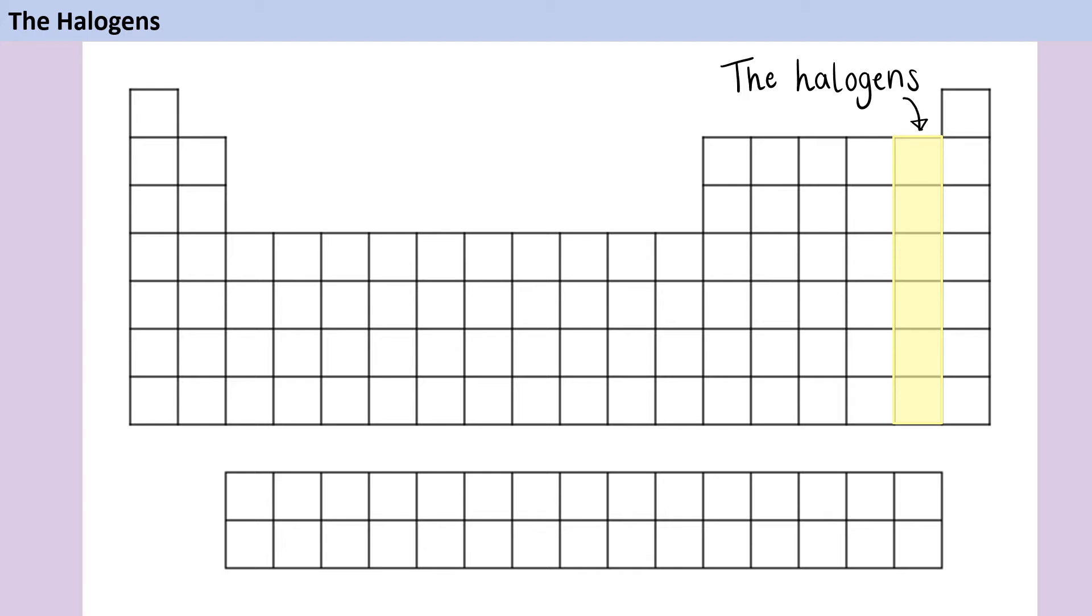The name halogen means salt former, because when these elements react with metals, they form compounds known as salts. This doesn't just mean the salt that you put on your fish and chips. Table salt, or sodium chloride to give it its chemical name, is just one example of the large group of compounds that chemists call salts.